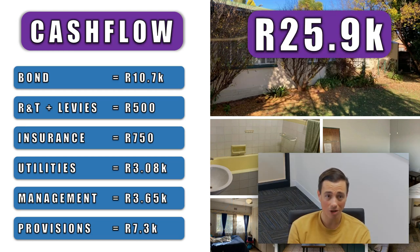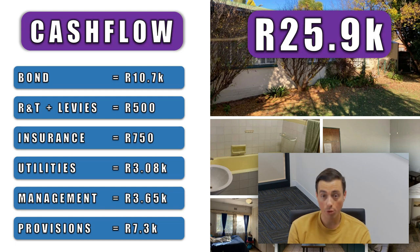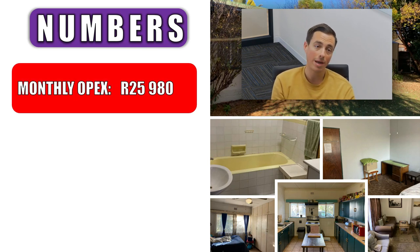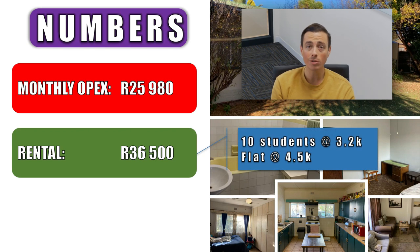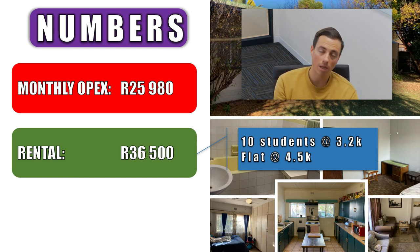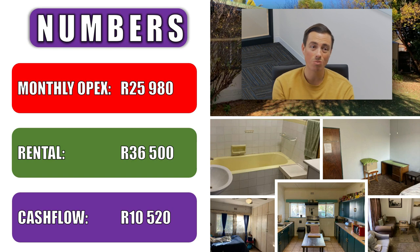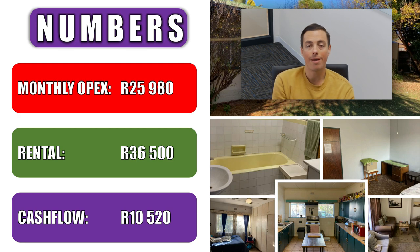Adding all these operating costs up, running this asset on a month-to-month basis will cost just under 26,000 rand per month. Rental income from 10 students sharing rooms at 3,200 rand per student, plus the flat at 4,500 rand, gives a total rent of 36,000 rand. Subtracting opex of 26,000 rand leaves a monthly cash flow profit of 10,520 rand.